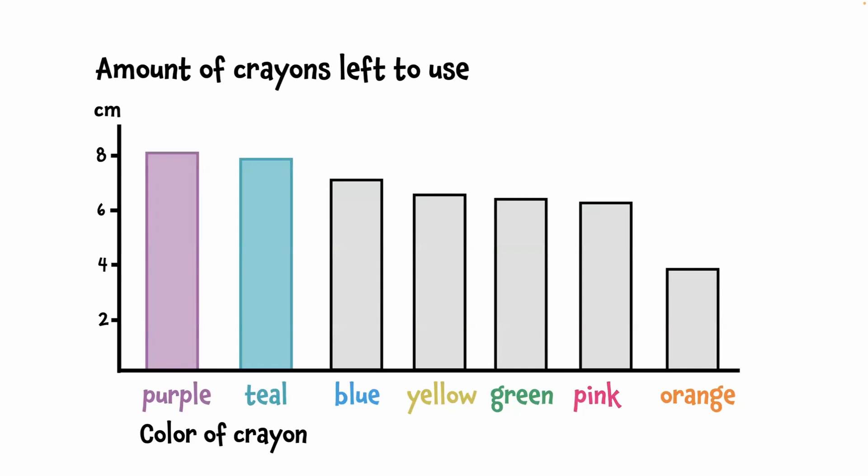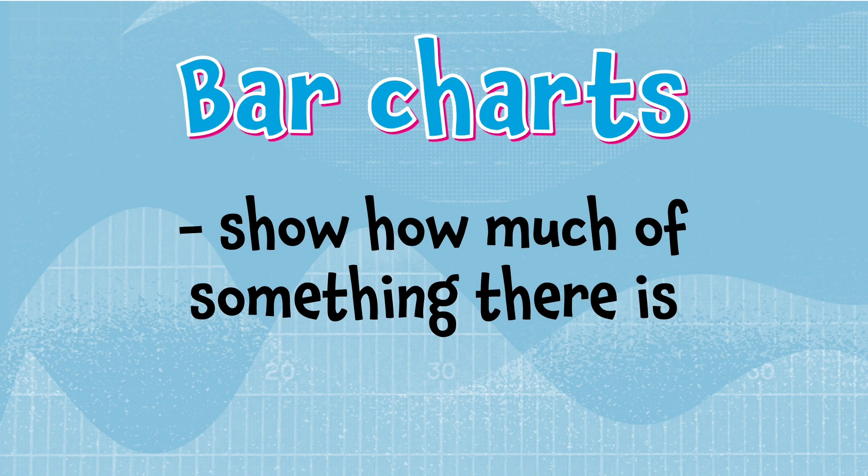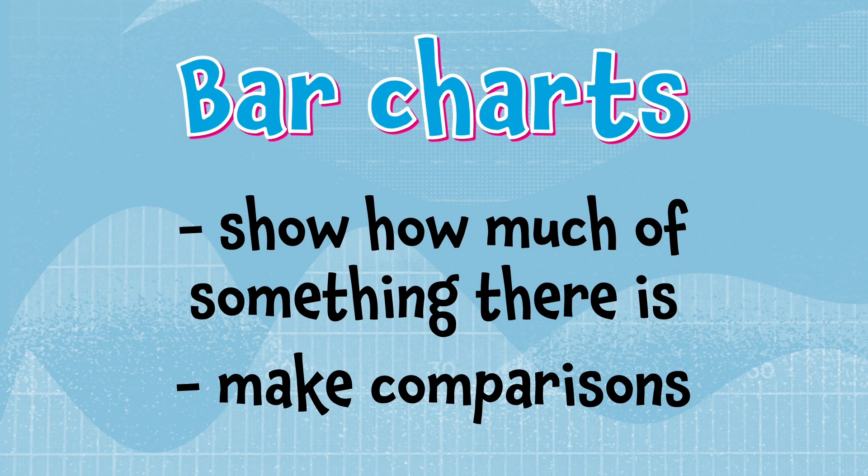Notice, it's just as easy now to see that the purple and teal crayons have the most left to use. In fact, looking at it this way in a graph, I can see there's a tiny bit more of purple to use compared to teal. And there's definitely the least left of orange. That's the kind of information we can learn from a bar chart. Where there's more of something, where there's less, how the bars compare to each other, and how they compare to where we'd like them to be, or our goal.